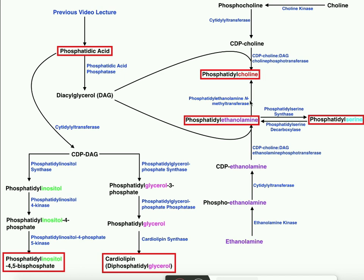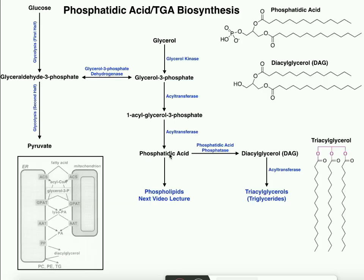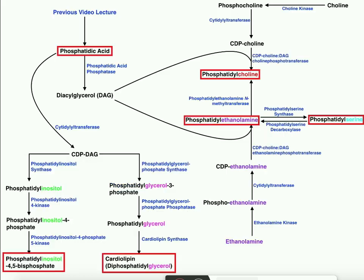Now let's get into the synthesis of these three phospholipid classes: phosphatidylcholine, phosphatidylethanolamine, and phosphatidylserine. We're going to start again with phosphatidic acid, but instead of first reacting it with the cytidyl transferase to give CDP-DAG, we're going to react it with phosphatidic acid phosphatase. This is the same reaction from two videos ago when we saw how to get diacylglycerol, the precursor to triglycerides. DAG is going to be used in two different reactions, but first we have to introduce the activation of the head groups.